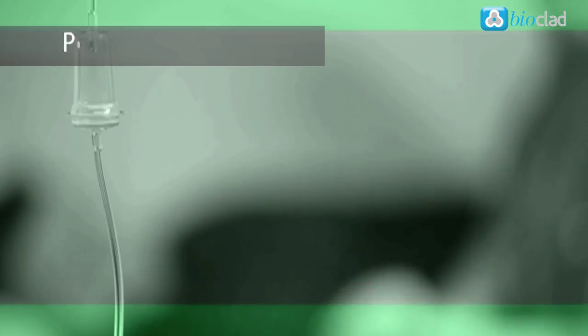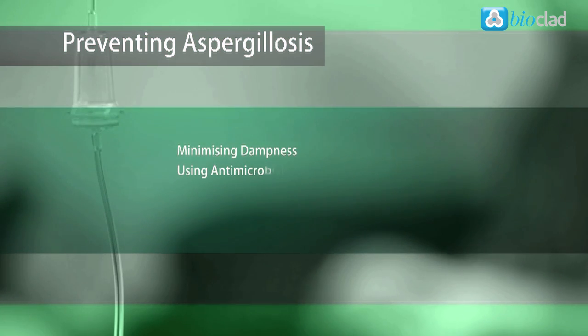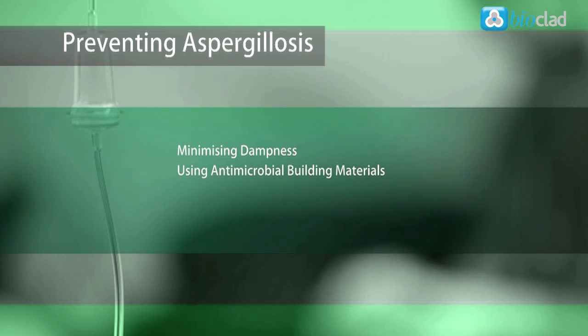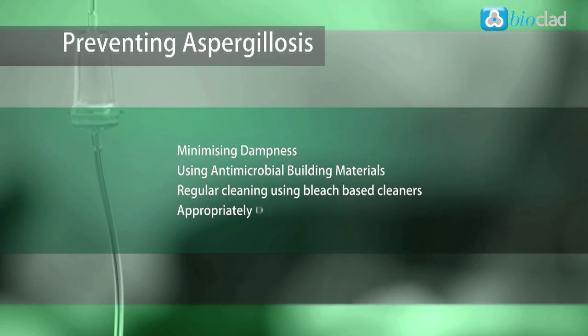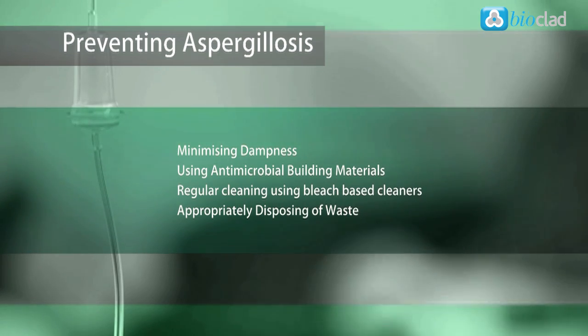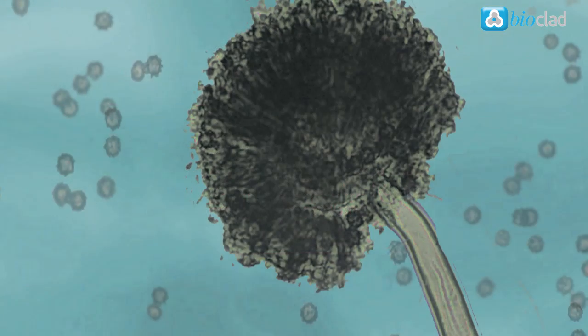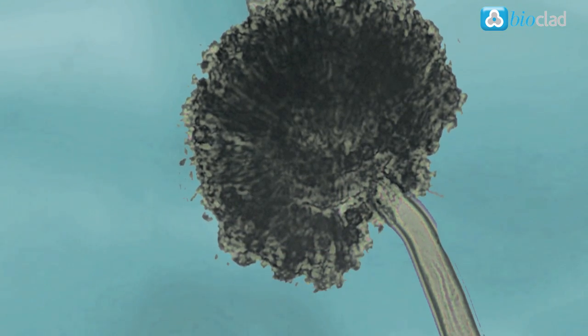Seeking to prevent the breakout by minimising dampness and using antimicrobial building materials is key to reducing the outbreaks of Aspergillus. Regular cleaning using bleach-based cleaners and appropriately disposing of waste where Aspergillus can grow should then minimise the inevitable growth from airborne spores.